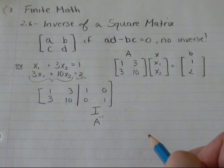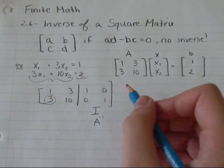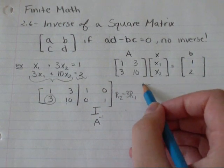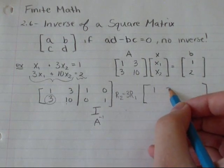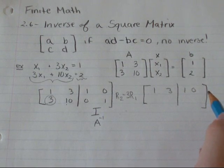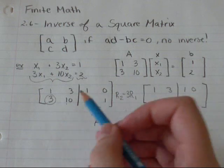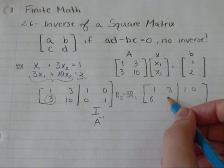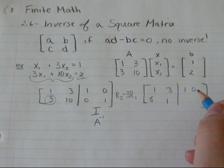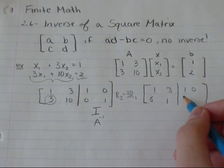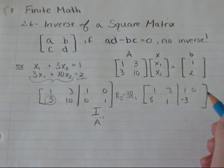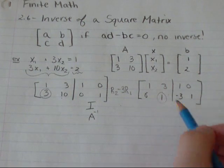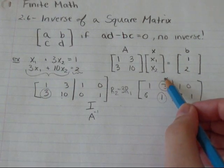So the first thing I'm going to do, I'm going to try and make this a 0 since that's already a 1. So I'm going to go row 2 minus 3 row 1. So row 1 stays the same: 1, 3, 1, 0. Row 2 minus 3 row 1: 3 minus 3 is 0. 10 minus 3 times 3 is 9... It's going to give me 1. And then 0 minus 3 is negative 3. And 1 minus 0 is still 1. So I've got a 1 down here. So that's good. I'm going to try and make that a 0.